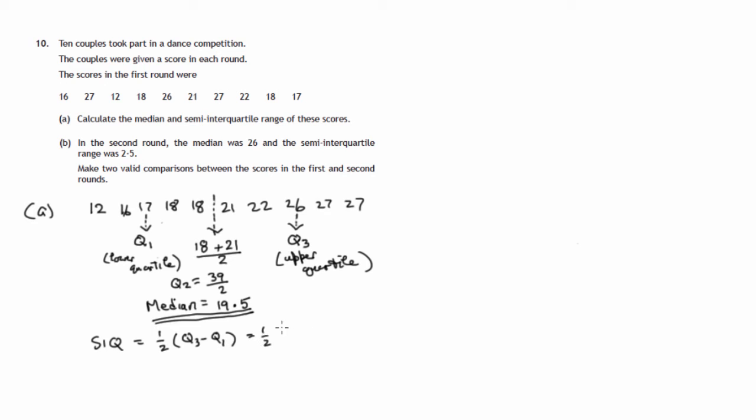So in this case, it's a half of 26 minus 17. So it's a half of 9, which is 4.5. So there's our answer to part A. Median is 19.5, semi-interquartile range is 4.5.